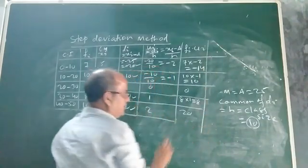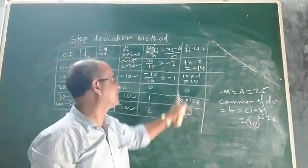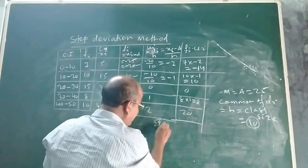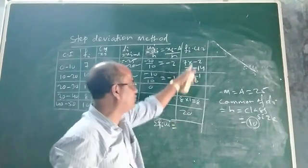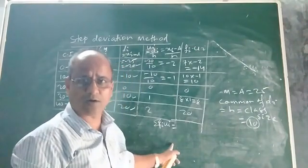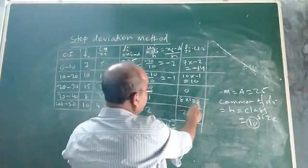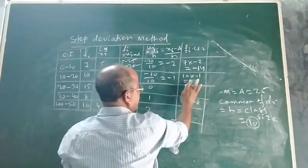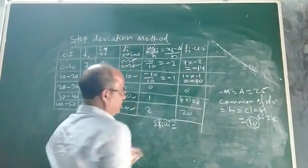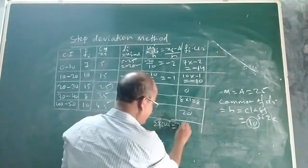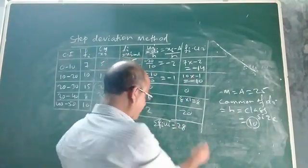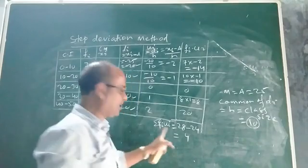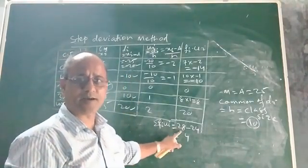Now I have all the values of the product Fi·Ui. To find Σf·u, we add all these values. The positive values: 20 + 8 = 28. The negative values: −10 + (−14) = −24. So Σf·u = 28 − 24 = 4.